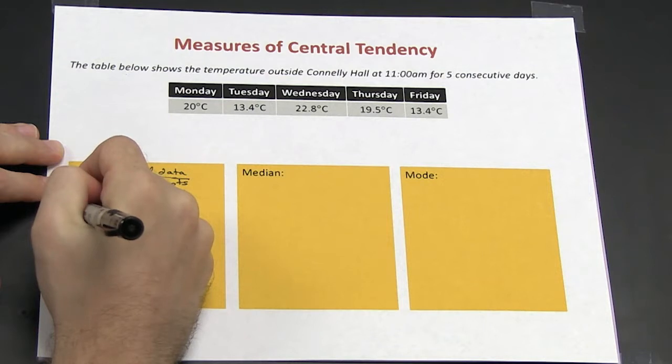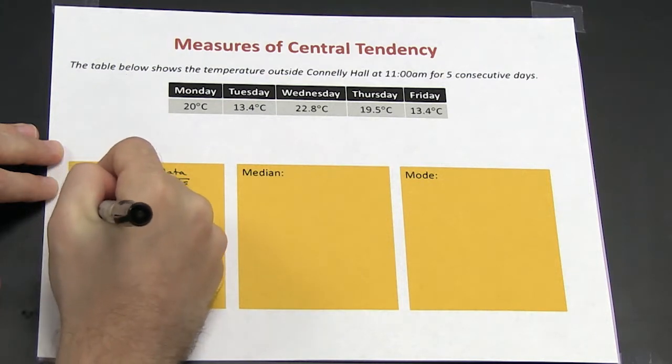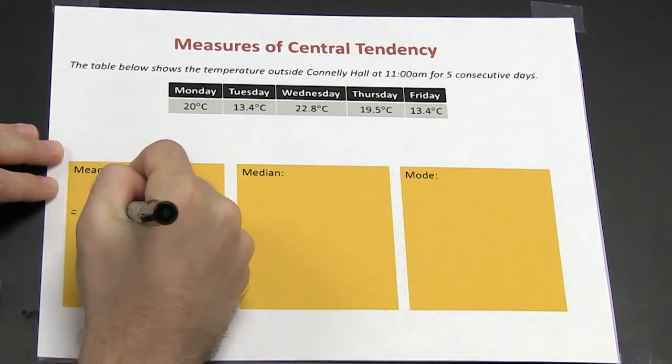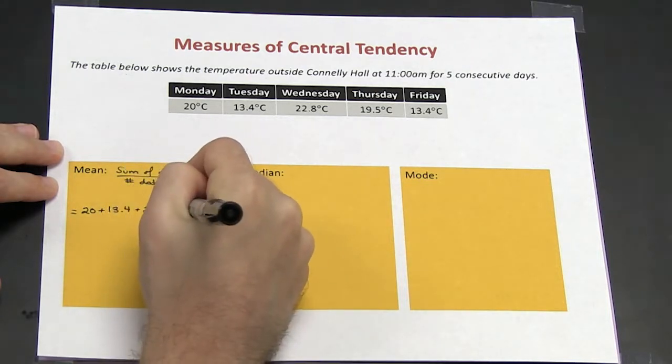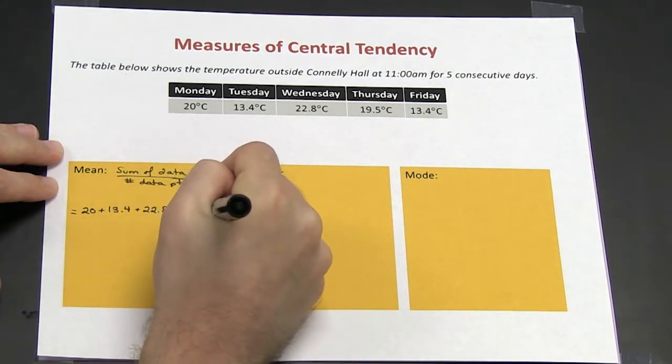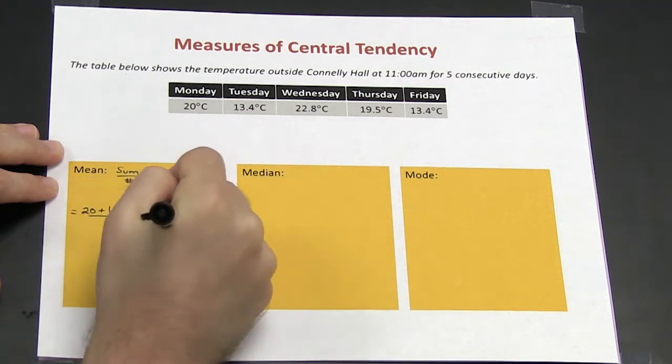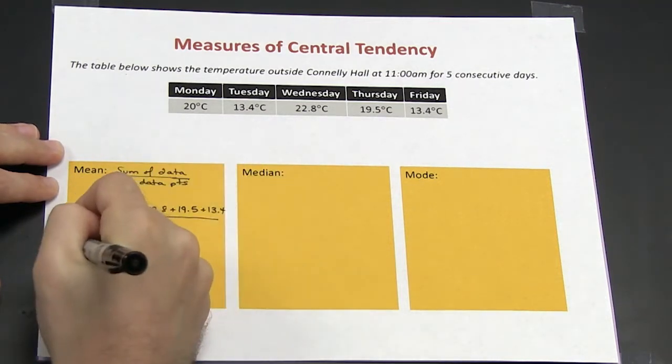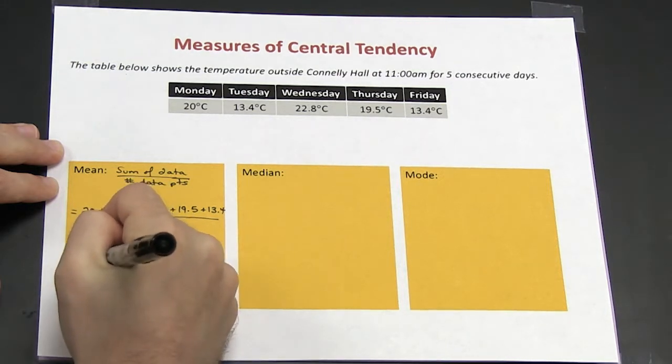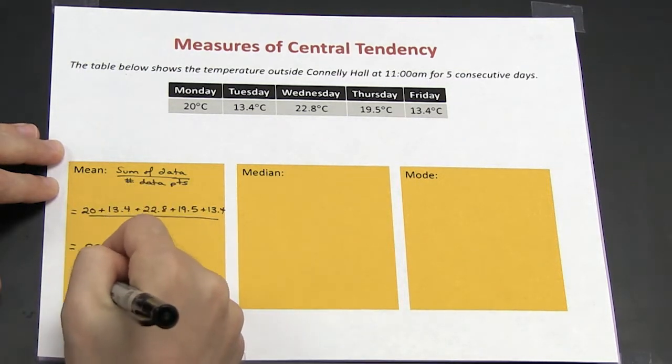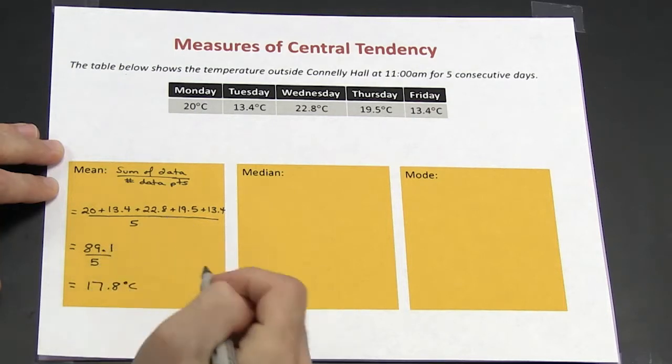So to calculate the mean, that would be 20 plus 13.4 plus 22.8 plus 19.5 plus 13.4 divided by 5, which is 89.1 divided by 5, which gives me 17.8 degrees Celsius.